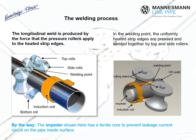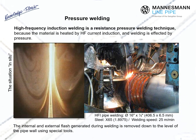To produce the weld, the heated strip edges are squeezed together. The pressure required for this is generated by the side and especially the top rollers. The impeder shown in the schematic on the right is part of the electrical system. It has a ferrite core to prevent leakage current circuits on the pipe inside surface. High frequency induction welding is classified as a resistance pressure welding process because, on the one hand, heating of the material is affected by high frequency current and the material's resistance, and, on the other, it applies pressure.